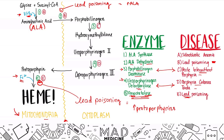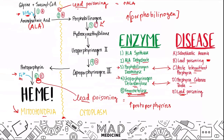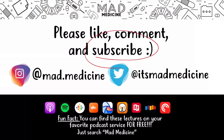I highly recommend you write down all of these steps and memorize this pathway — it's important because you can be tested on what happens if a specific enzyme is blocked. They'll ask not only about the disease, but also which molecule will be increased. For example, if porphobilinogen deaminase is blocked, porphobilinogen levels will increase. Lead poisoning questions may also ask which enzymes lead blocks. Spend some time with this. Don't forget to like, comment, and subscribe, and find our lectures free on your favorite podcast service by searching Mad Medicine.